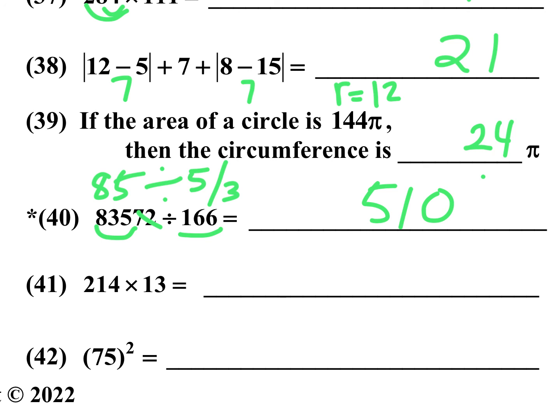And we've got two more here. Number 41, 214 times 13. I would multiply 13 times 4 is 52. Carry a 5. 13 times 1 is 13 plus 5 is 18. Write an 8, carry a 1. 13 times 2 is 26 plus the 1 that we carried is 27. 2782 is the correct answer.